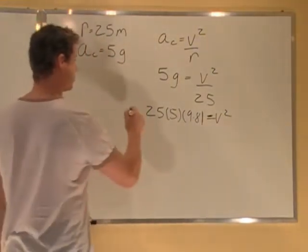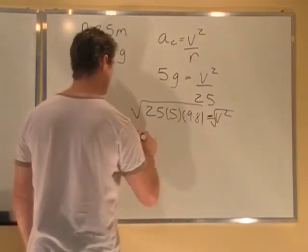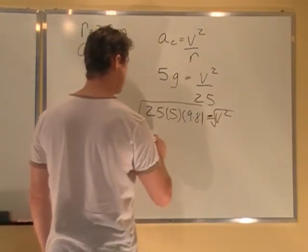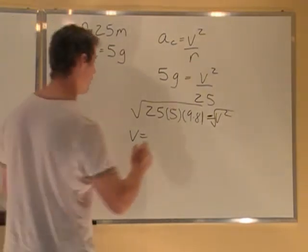So all we have to do is take the square root of both sides, so we're left with V equals basically whatever that is, which is 35 meters per second.